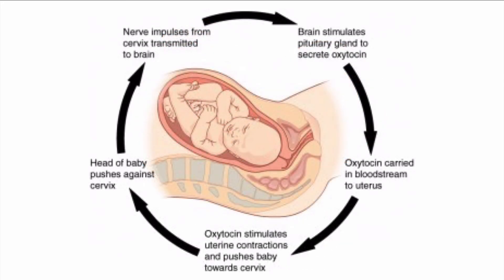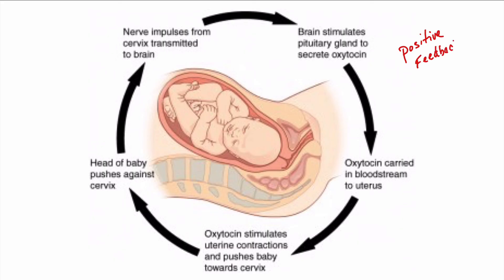Once development has reached maturity — so we get to our ninth month, full gestation — the baby is ready to be birthed. The baby's head descends down the birth canal and starts to push against the cervix. That sends nerve impulses from the cervix to the brain. The brain releases a hormone called oxytocin from the pituitary gland. Oxytocin is carried through the bloodstream, gets to the uterus, and stimulates contractions — the muscles contract and squeeze, forcing the baby out. In the process, it also puts more pressure on the cervix, which causes this cycle to continue. This is an example of positive feedback — it just keeps going, getting stronger and stronger until the baby is pushed out of the uterus.